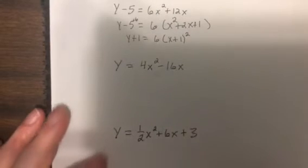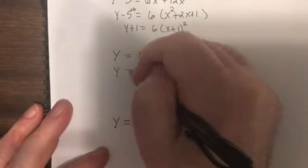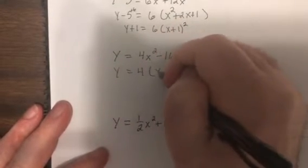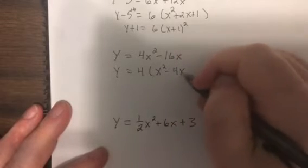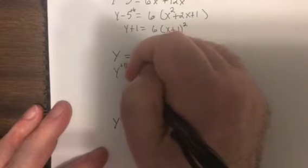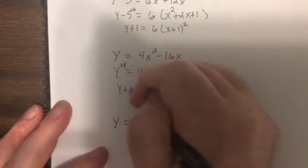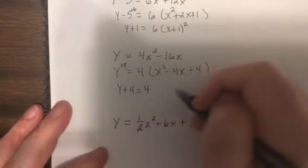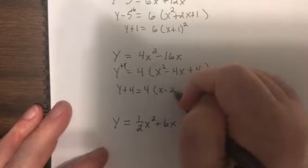So, here. Factor out a 4. So, 4x squared minus 4x. Half of 4 is 2, 2 squared is 4. So, it would be y plus 4 equals 4x minus 2 squared.